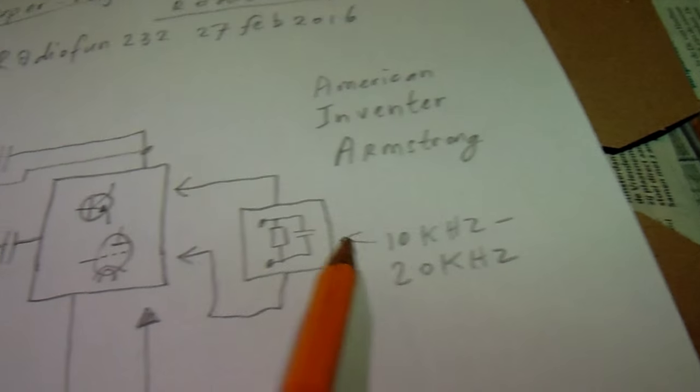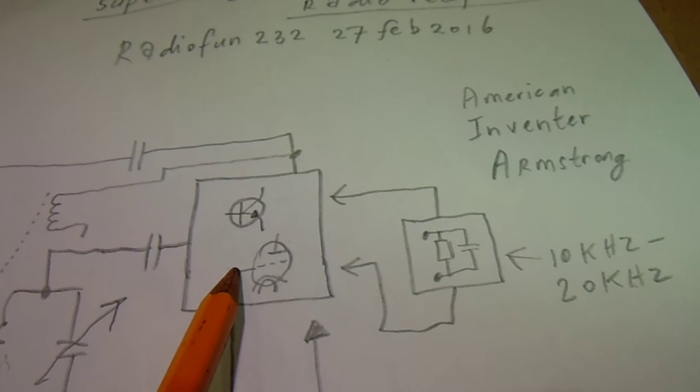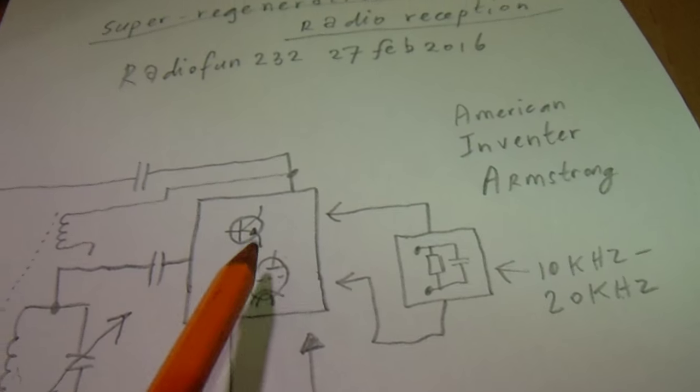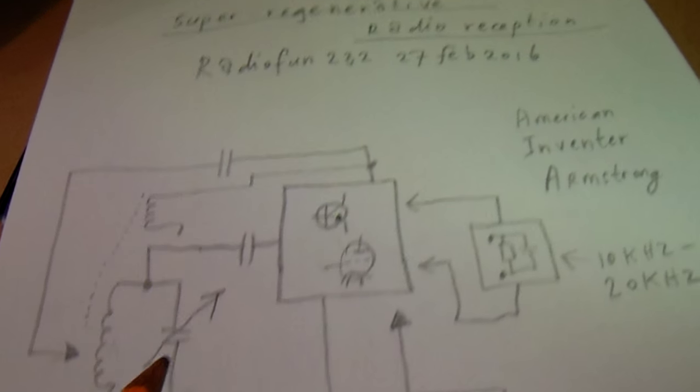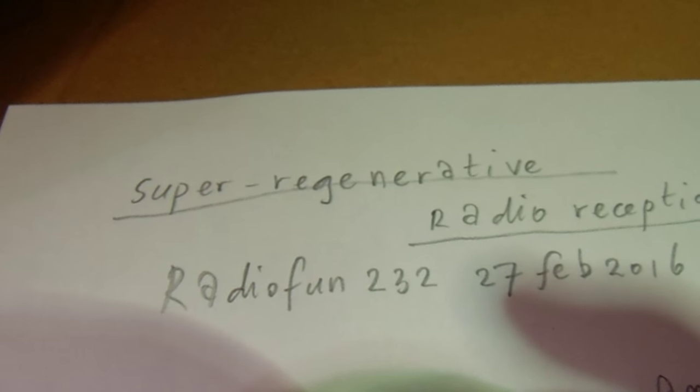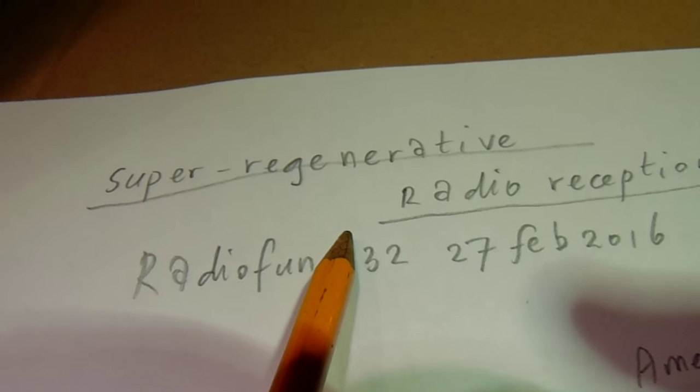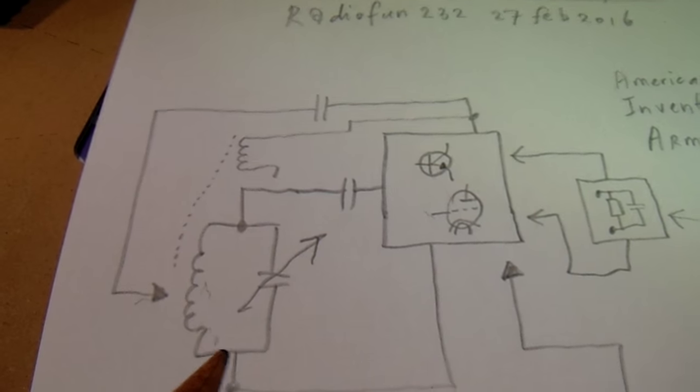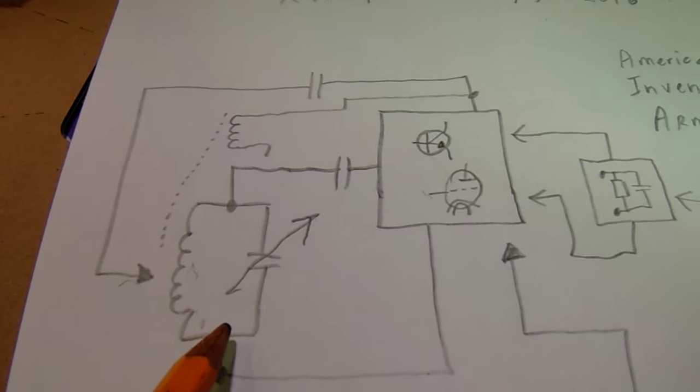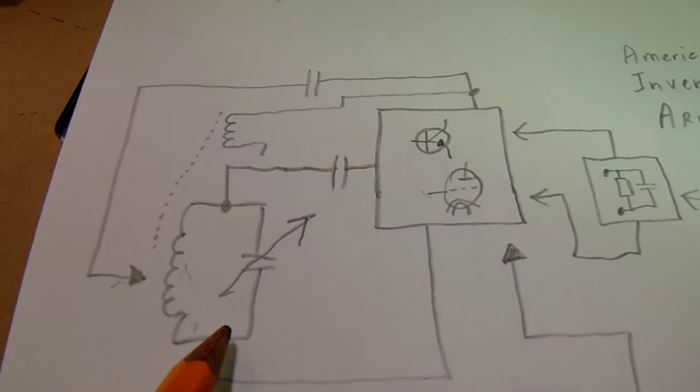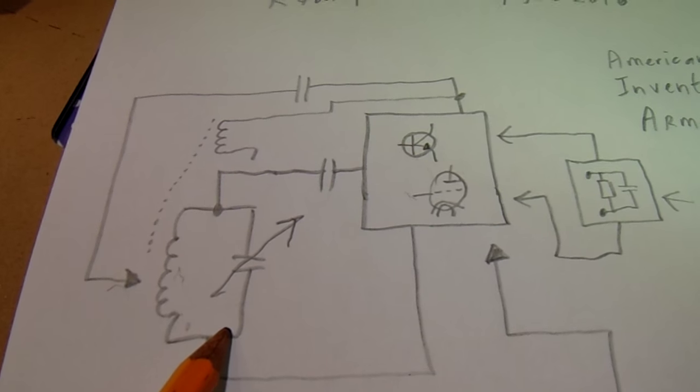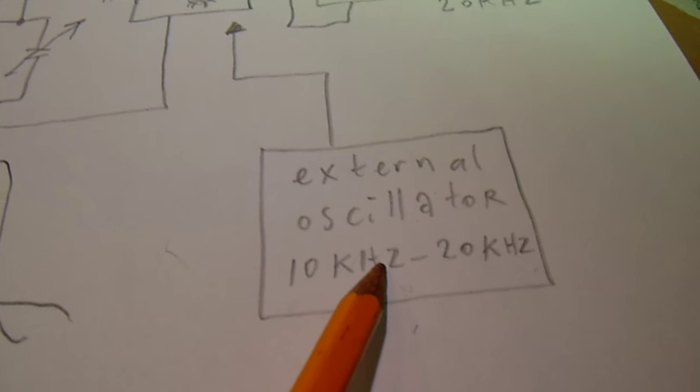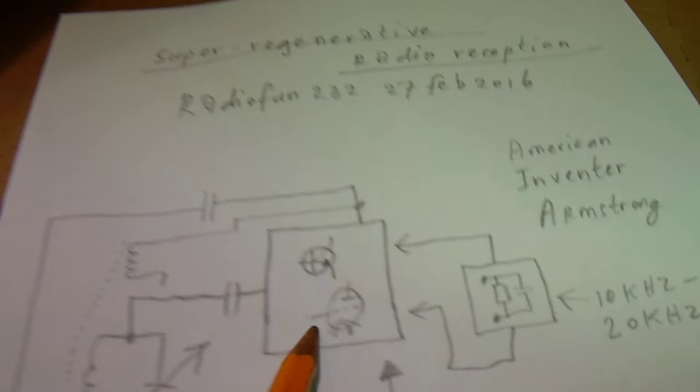So with super reg receivers, they are suitable for to receive AM and FM, frequency modulated radio signals. We have a situation where the input coil, the antenna coil, is constantly kept at its maximum sensitivity. With the help of such an external oscillator, or inside, inside the reception unit.